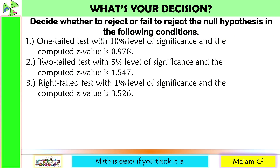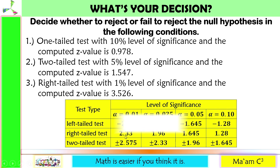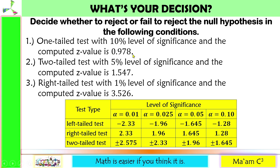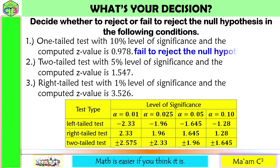Let's have an activity: Watch your decision. Decide whether to reject or fail to reject the null hypothesis. We have computed Z values, so we need the Z critical values. Number 1 is a one-tailed test with 10% level of significance. The computed Z value is 0.978; its absolute value is 0.978, which is less than 1.28. Since it is less, the decision is fail to reject the null hypothesis.